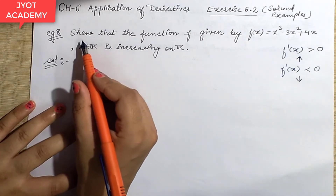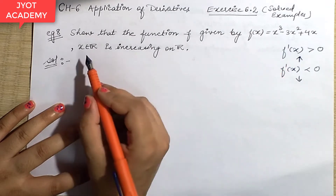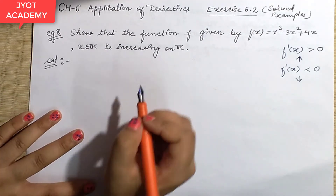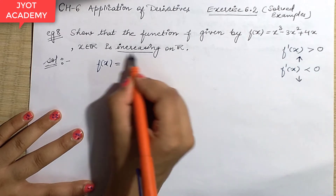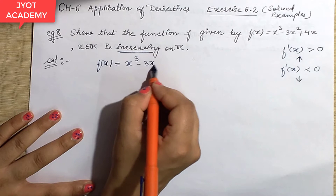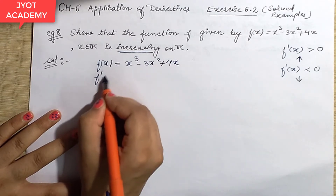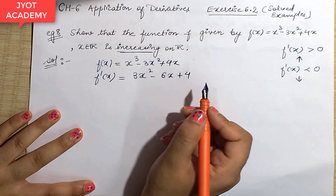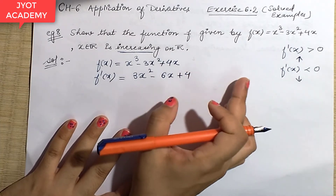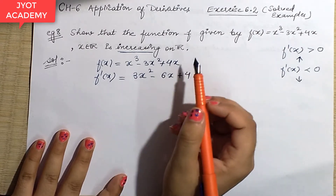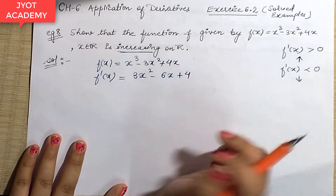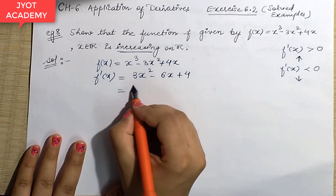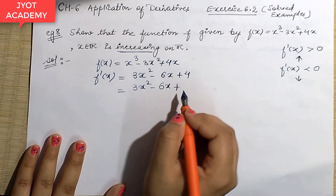Example 8: First of all, show that the function f, given by this function where x belongs to ℝ, is increasing on ℝ. ℝ is the real set. So first, I differentiate it with respect to x to get the derivative. Now for the interval, we have values like 6 plus 3 plus 1.